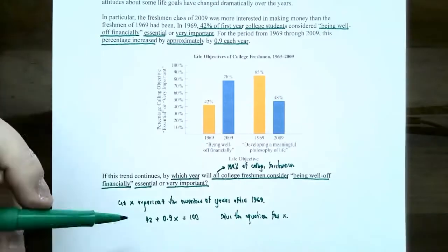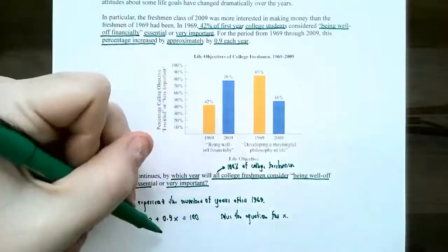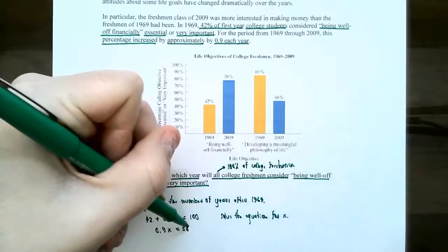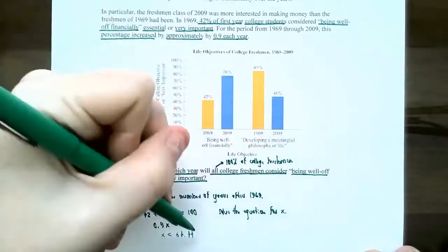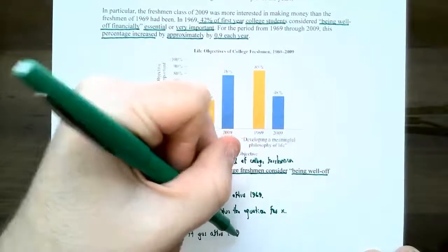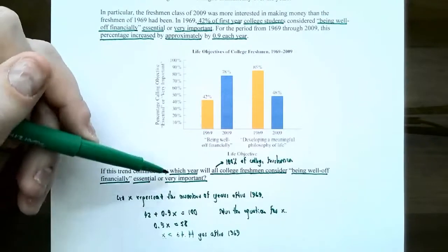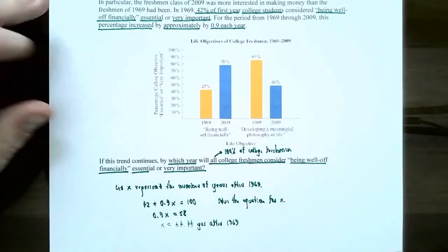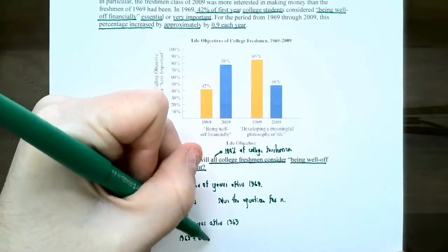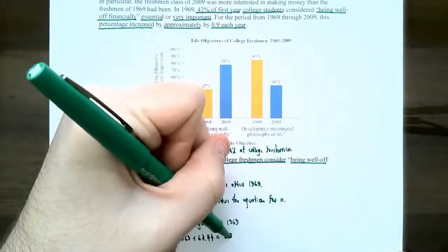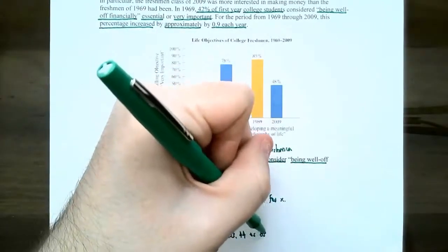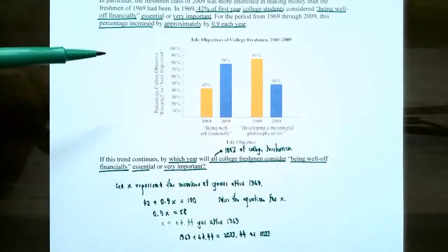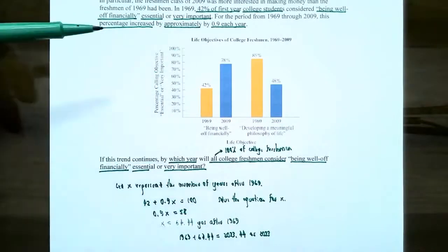Since it's a linear equation, isolate X by subtracting 42: 0.9X equals 58. Dividing by 0.9 gives X equals approximately 64.44 years after 1969. Adding 64.44 to 1969 gives 2033.44, so that would be the year 2033. In the year 2033, if this trend of increasing 0.9% every year continues, all college freshmen will say being well-off financially is very important or essential.